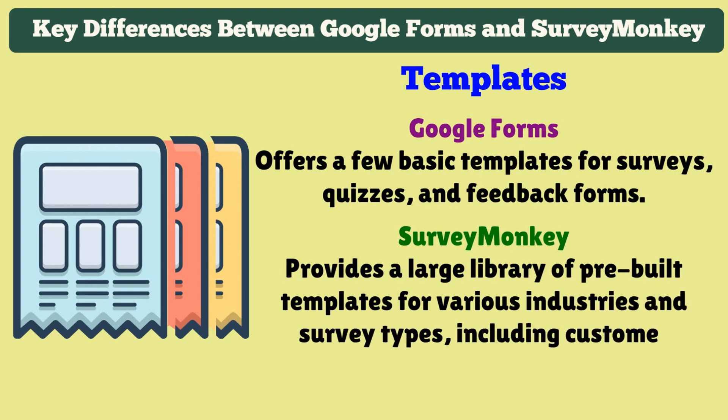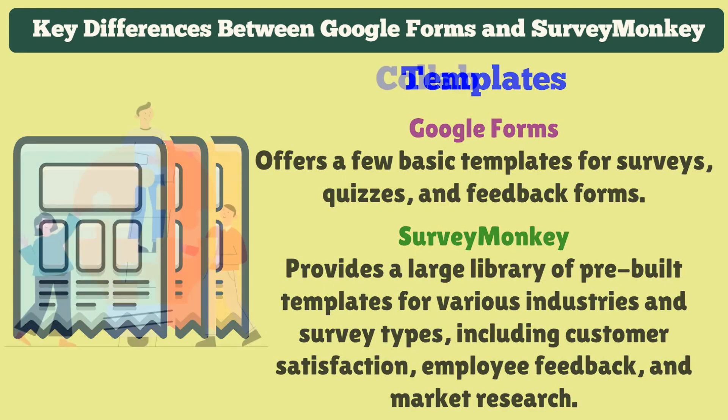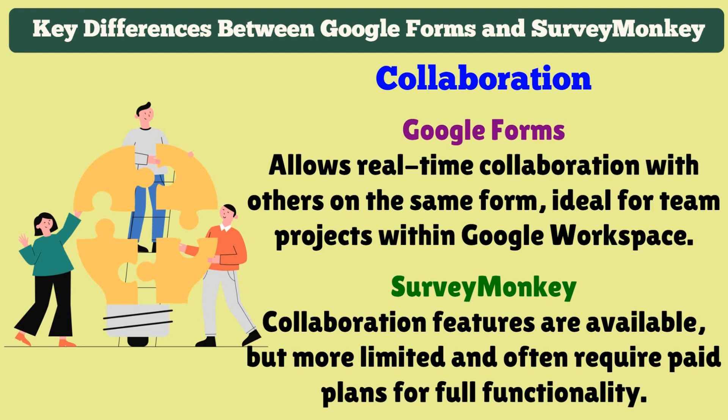Templates: Google Forms offers a few basic templates for surveys, quizzes, and feedback forms. SurveyMonkey provides a large library of pre-built templates for various industries and survey types, including customer satisfaction, employee feedback, and market research. Collaboration: Google Forms allows real-time collaboration with others on the same form, ideal for team projects within Google Workspace. In SurveyMonkey, collaboration features are available but more limited and often require paid plans for full functionality.